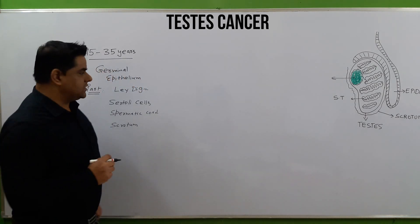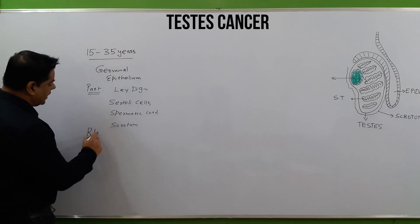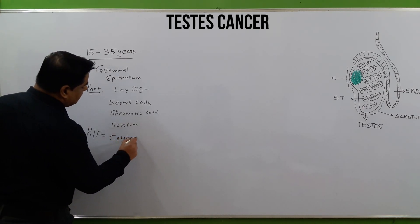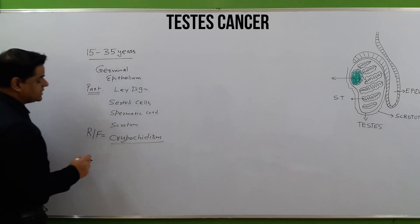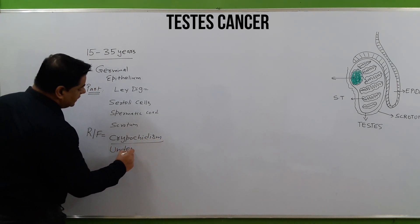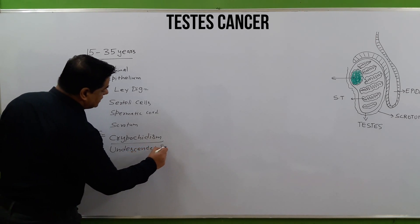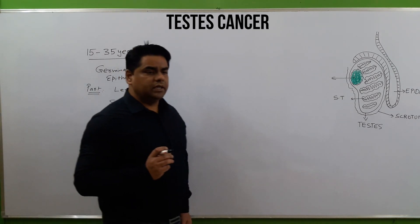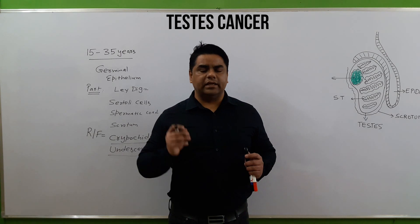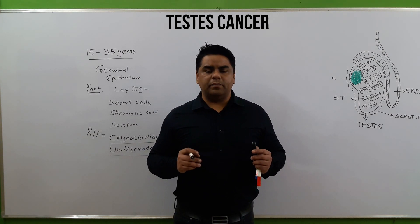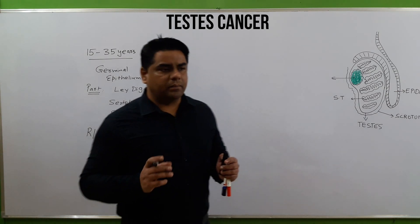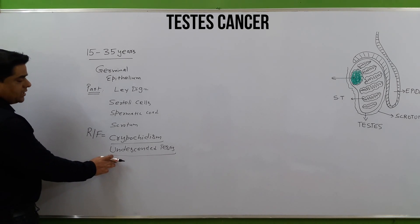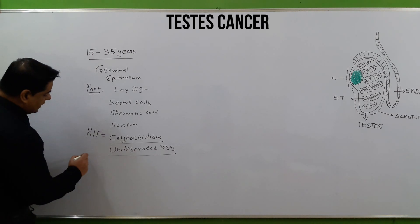The main risk factors include cryptorchidism, which means undescended testes. During the fetal period, the testes are present in the abdominal cavity and should descend into the scrotum later in pregnancy. In some male babies, they unfortunately remain undescended, which can cause testicular cancer.